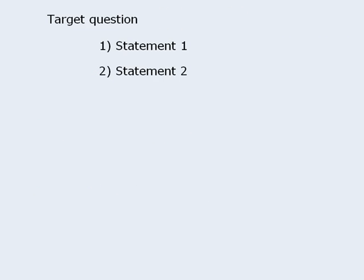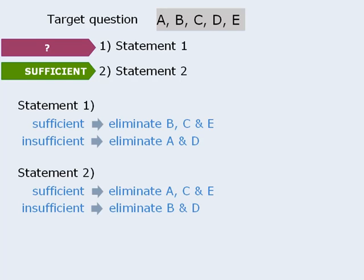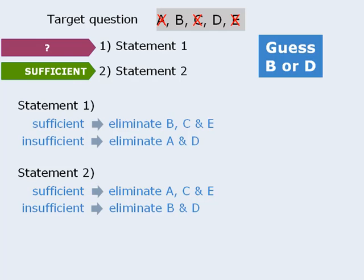One more example. For this question, let's say that we are able to determine that statement 2 is sufficient, but statement 1 is a mystery. By the elimination method, we know that if statement 2 is sufficient, we can eliminate answer choices A, C, and E. So we will guess either B or D. As you can see, the elimination method is important for identifying your guessing options, so you must become very familiar with this method.